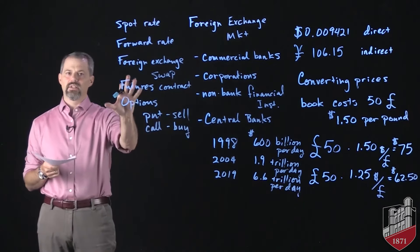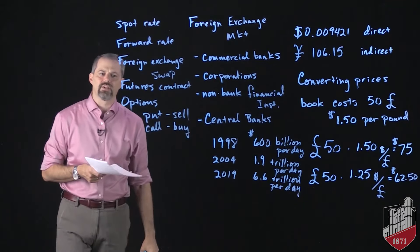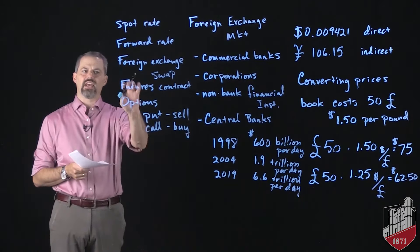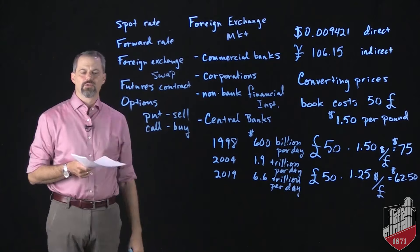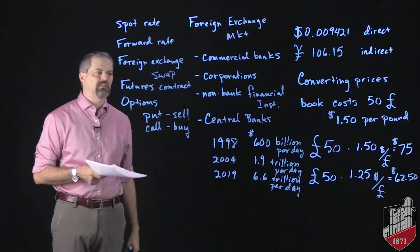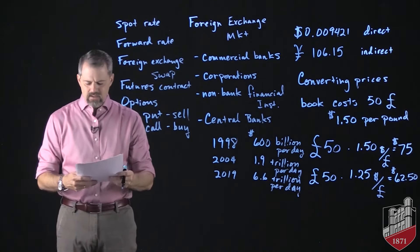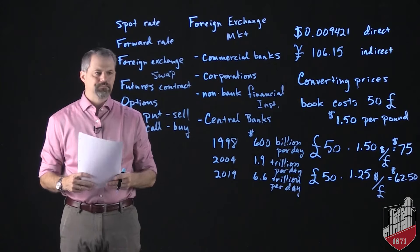You can buy two different types of options: a put option or a call option. A put option means that at some point in the future you're going to sell a specific amount of foreign currency, and a call option means you can exercise the right to buy a specific amount of foreign currency at some point in the future. We just need to understand what those terms mean because you'll run into them occasionally when talking about the foreign exchange market.